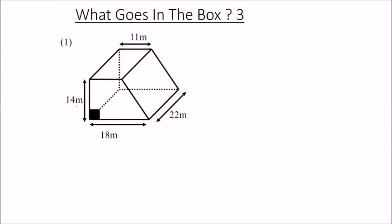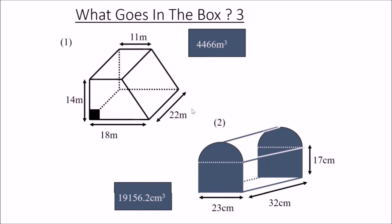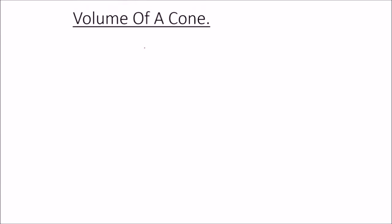The last complex shape is left as an exercise — with dimensions 4, 4, 6, 6, the answer is 19156.2. Please try it out and check your answer. Next, we discuss the volume of a cone.